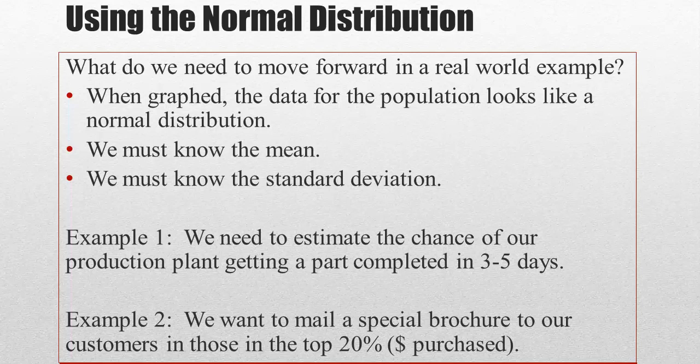So, example 1, we need to estimate the chance of our production plant getting a part completed in 3 to 5 days. So, looking back historically, the production plant is known to be normally distributed in their production. And we know the average or the mean amount of time it normally takes to get that part done. And we know the standard deviation for that same part in days. So, we have all the facts we need to work on example 1. Now, I'm not going to actually do it here. That's going to be one of the next few videos.